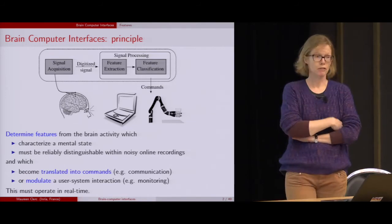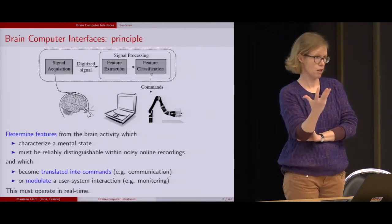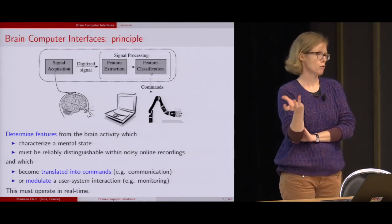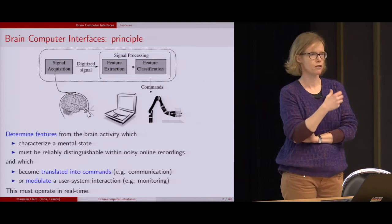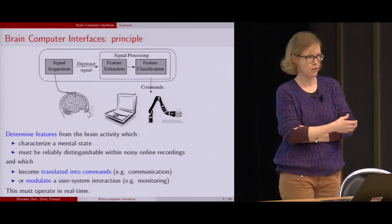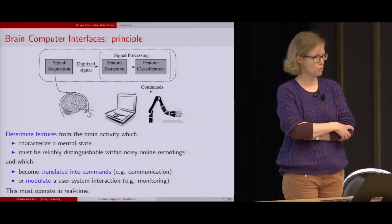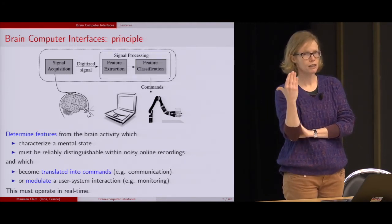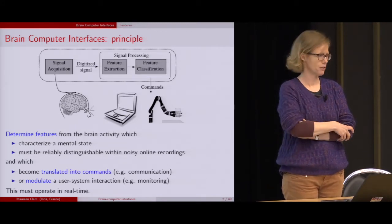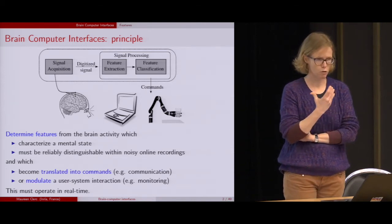Another part of the brain-computer interface loop is, once you have extracted and classified features, to translate them into something useful for the user. These can be commands or some type of communication that the user might be able to do thanks to their brain activity. We can also think of more passive brain-computer interfaces in which the user's interaction with a system will be modulated thanks to the information we get about their brain — we will see this towards the end of the talk in an application on visuospatial attention.